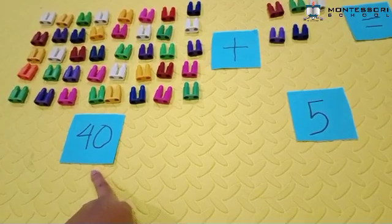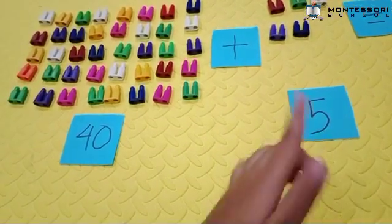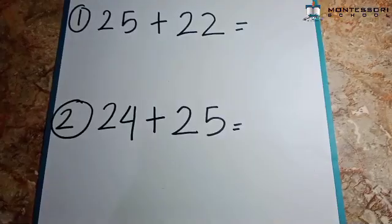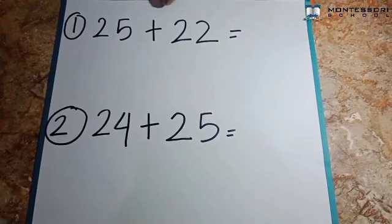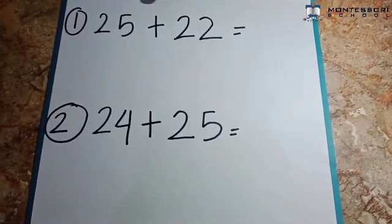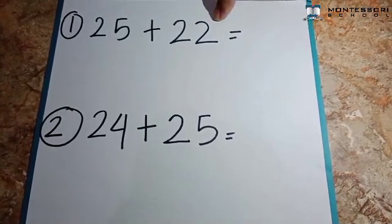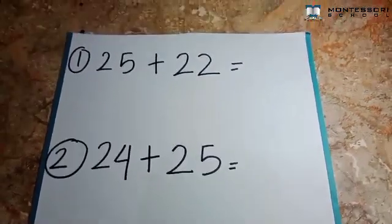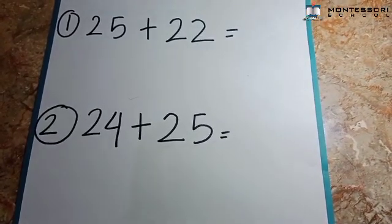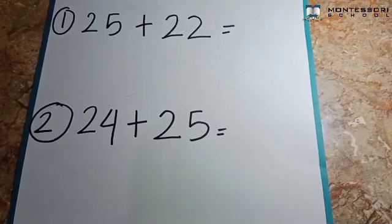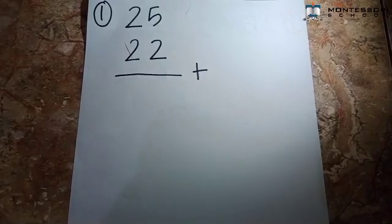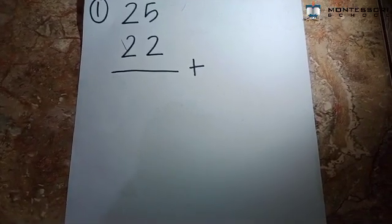So 40 plus 5 equals 45. Friends, here I have math problems. Number one is 25 plus 22. To help you count the numbers more easily, let's do it the regrouping addition way. This is what we call regrouping addition.